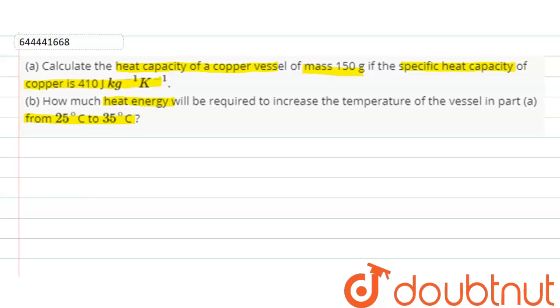So friends, let's solve the problem sequentially. For part a, we know the heat capacity of any substance HC is given by m × s, where m is the mass of the substance and s is the specific heat capacity of the substance.